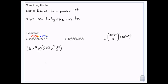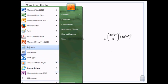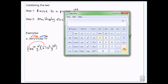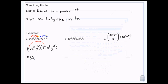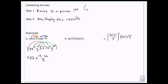Now that I've done the power, then I multiply. I'm going to do 16 times 27, which is 432. Then my exponents — because I'm not raising to a power, I'm multiplying — they get added. So x to the 13th. And then y to the 36th. So: raised to a power first means multiply the exponents, and then multiplying the results means add the exponents.